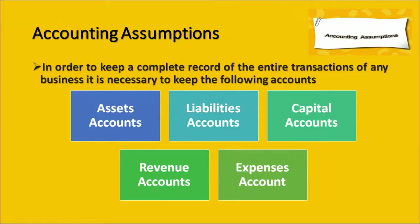In order to keep a complete record of all transactions of any business, it is necessary to keep the following accounts. The assets account covers tangible and intangible assets such as machinery, labor, and goodwill. The liabilities account covers what the company owes to others, like credit, outstanding expenses, and outstanding salary or wages. There are also capital accounts and revenue accounts, which refer to the monetary value of goods and services, and expenses accounts, which refer to expenditure incurred — such as discount given or interest given.